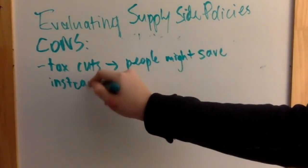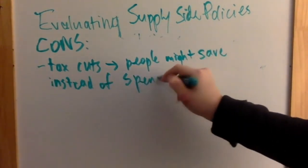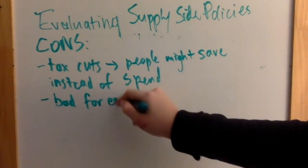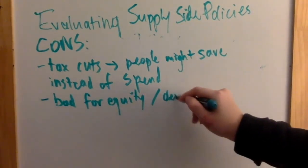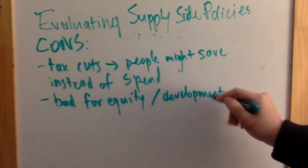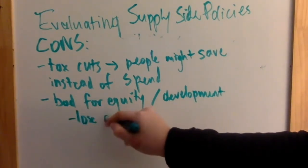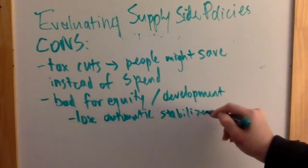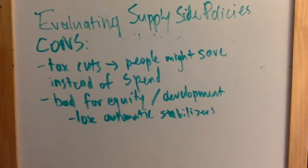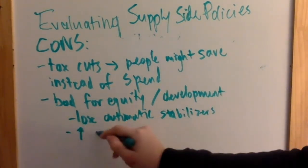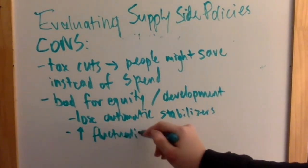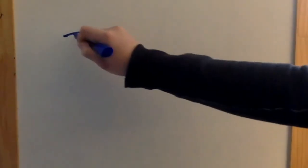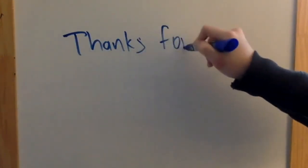We also have to consider this from an economic development standpoint. Decreasing minimum wage and unemployment benefits may be good for stimulating the economy, but it's bad for equity and development because the quality of life for low-income and unemployed people decreases and we're losing an automatic stabilizer. Supply-side policies also don't smooth out the business cycle — if anything, they make the fluctuations worse. And that's it for this video. Thank you for tuning in to IB7 Economist. Good luck surviving the IB wilderness.